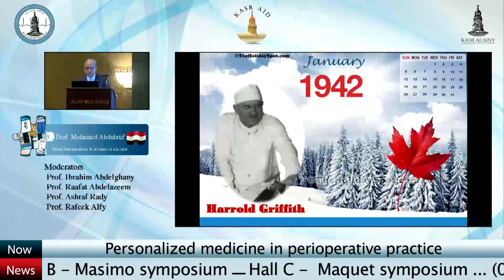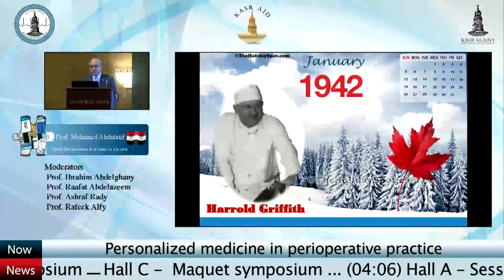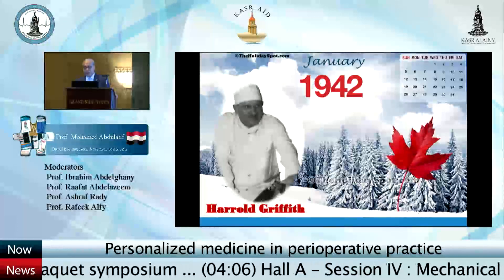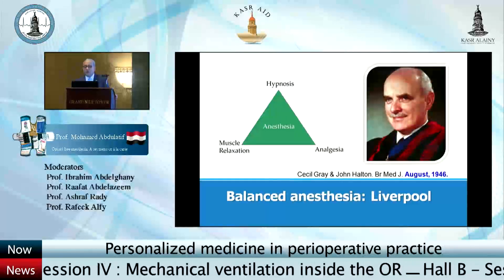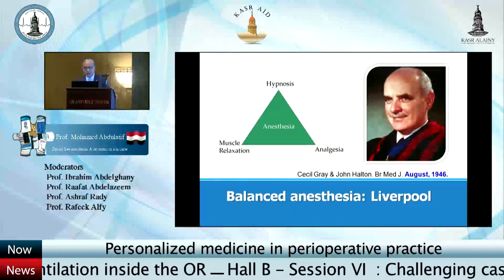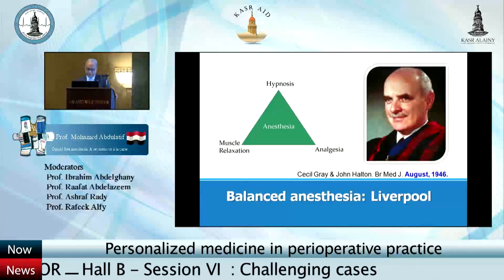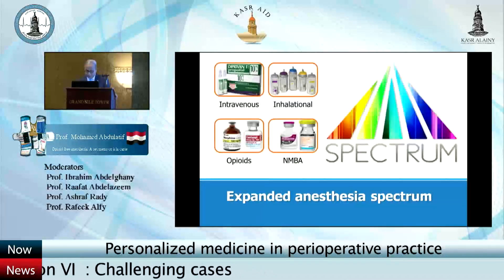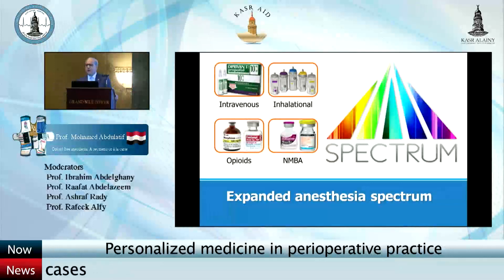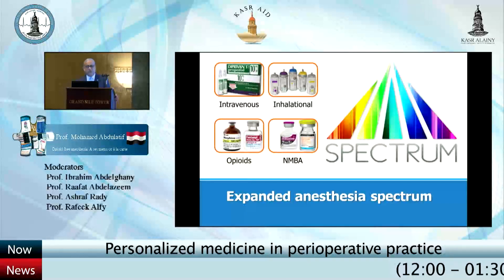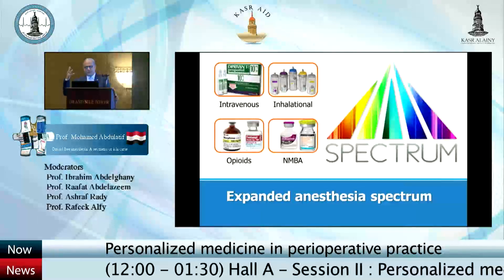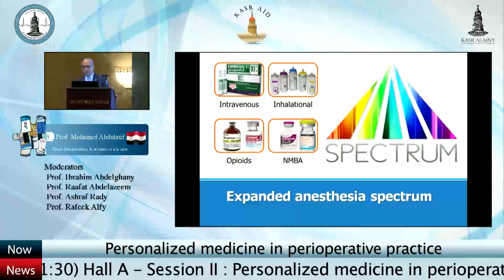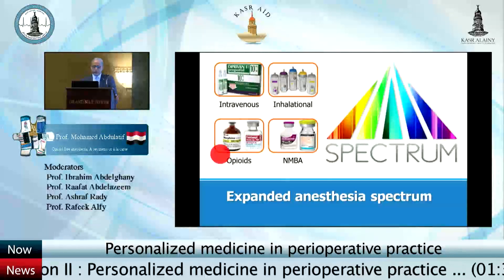After 100 years, Harold Griffiths introduced the use of curare — a neuromuscular blocker — in Montreal, Canada. Four years later, Cecil Gray in Liverpool developed the concept of balanced anesthesia: analgesia, hypnosis, and a degree of muscle relaxation, which we adopt in everyday practice. The spectrum increased with several inhalation anesthetics, neuromuscular blocking agents, intravenous induction agents — mostly propofol — and the mother component, morphine, along with many synthetic opioids. I will concentrate on opioids.